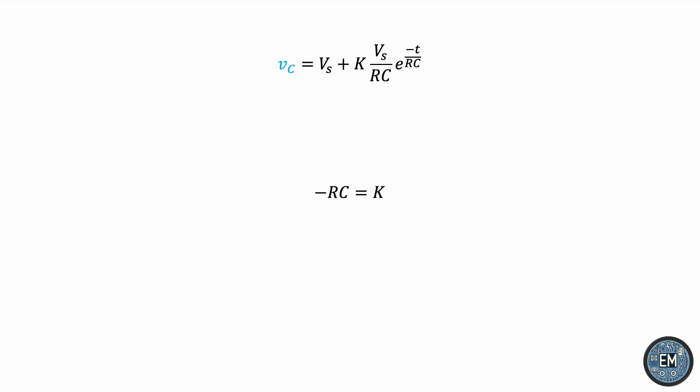This will give us K = -1/RC. So substituting back K = -1/RC into the equation for the capacitor voltage, we can see that RC will cancel out and we'll end up with this solution for the capacitor voltage as a function of time.